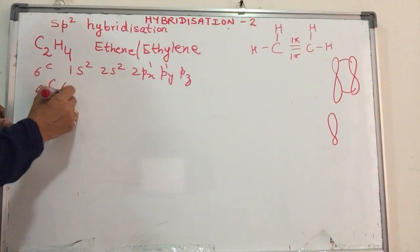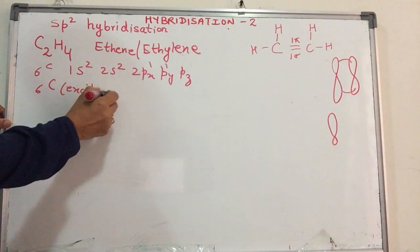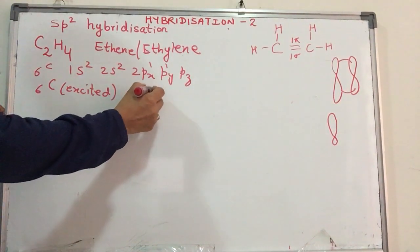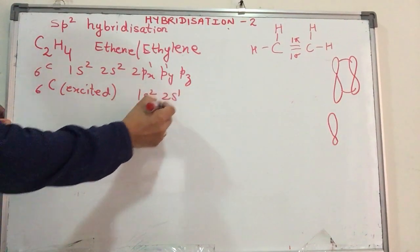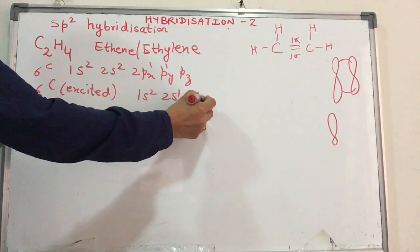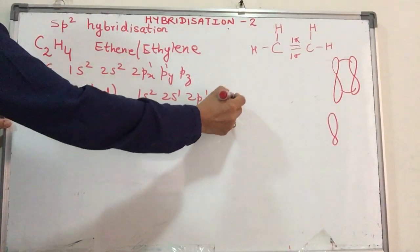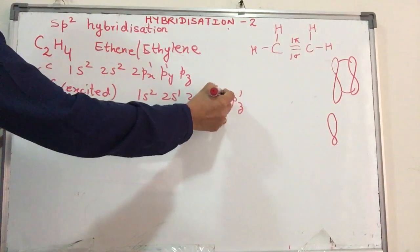Now carbon in the excited state, because of the approach of the hydrogen atoms, requires the electronic configuration 1s2, 2s1, 2px1, y1, z1.